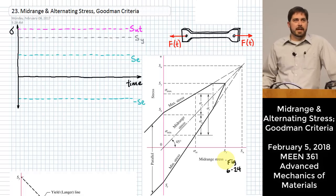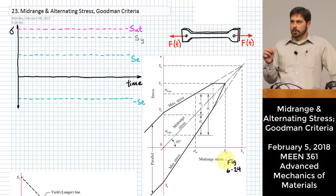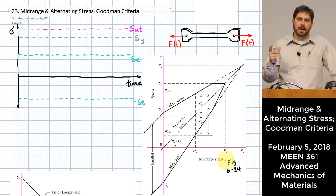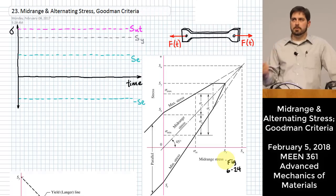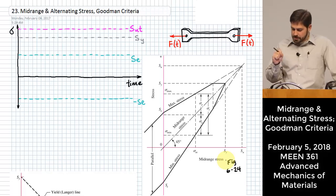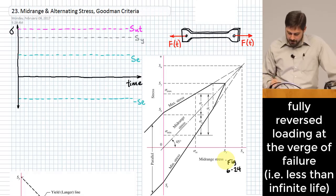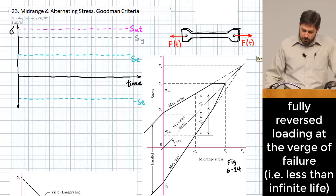We're going to talk about fatigue today some more. What you have seen so far is a variety of fatigue where you have a load scenario called a fully reversing load. It means that whatever stress you apply in the positive direction at a particular critical point in a material, you're also applying that same magnitude of stress in a compressive direction, oscillating between those two.